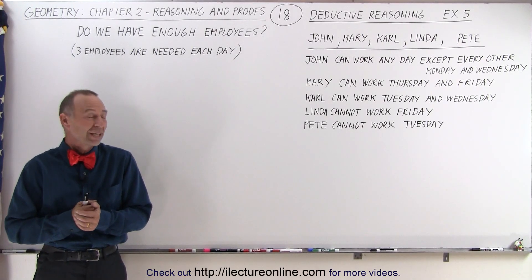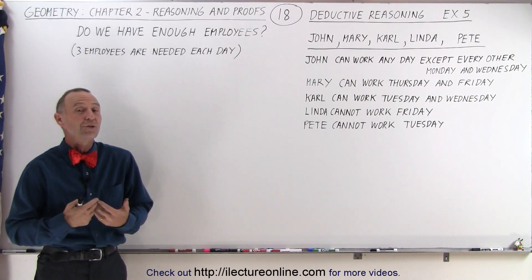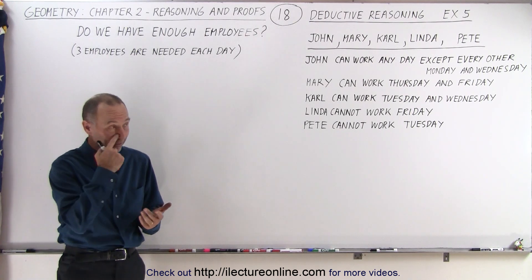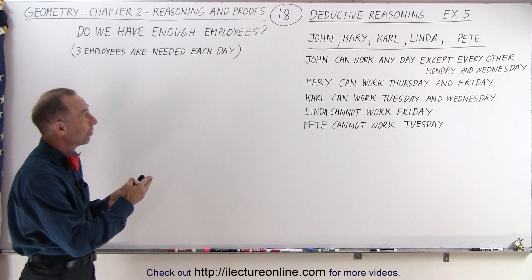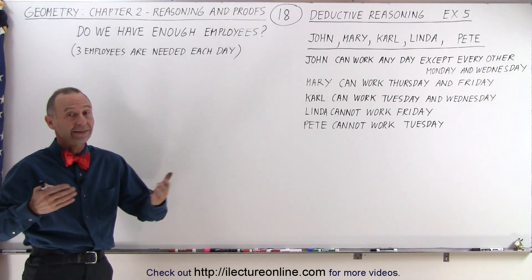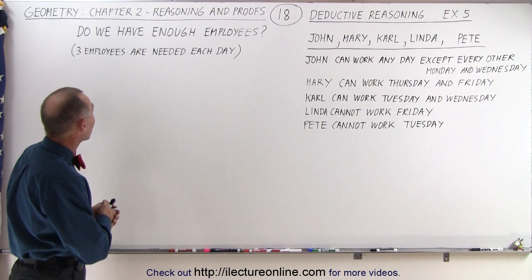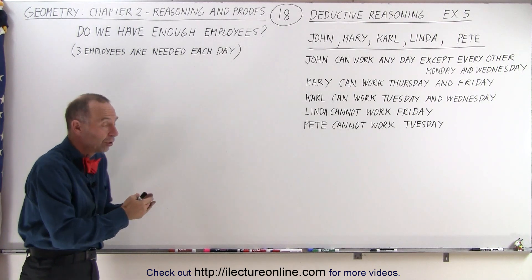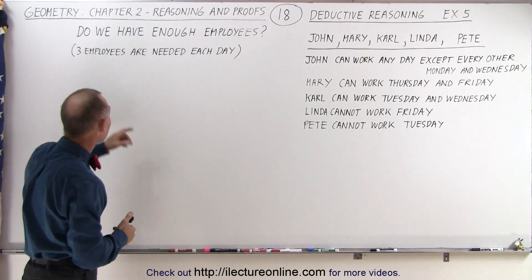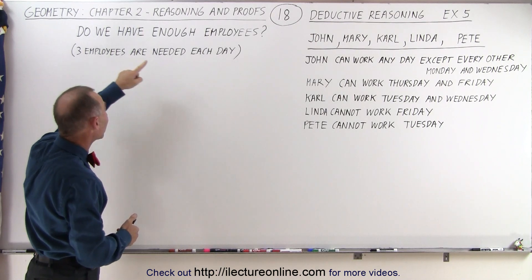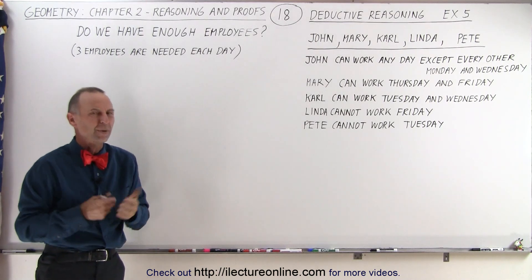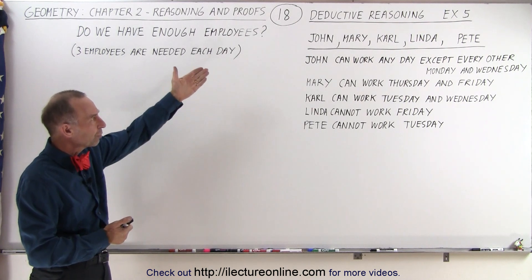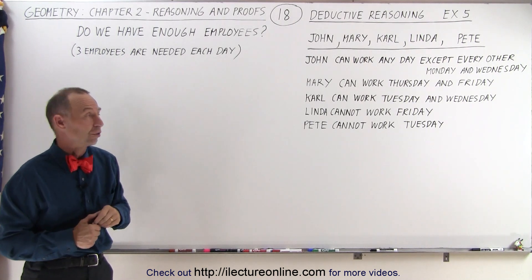Welcome to our lecture online. Here's our next problem for which we need to use some deductive reasoning. We have an example where we have five individuals working inside a store. The question is do we have enough employees — the requirement is that we need three employees for every day of the week, Monday through Friday. Here we have five employees which have individual restrictions.